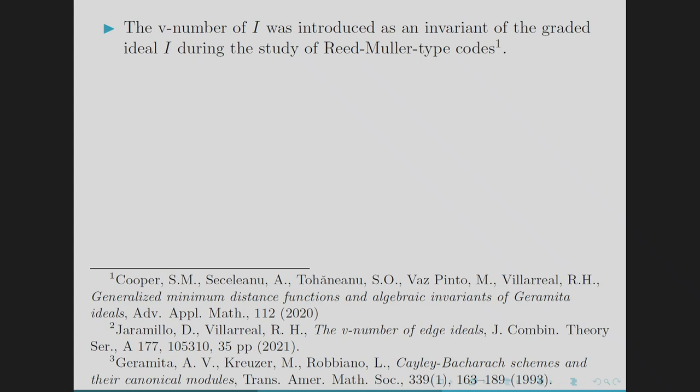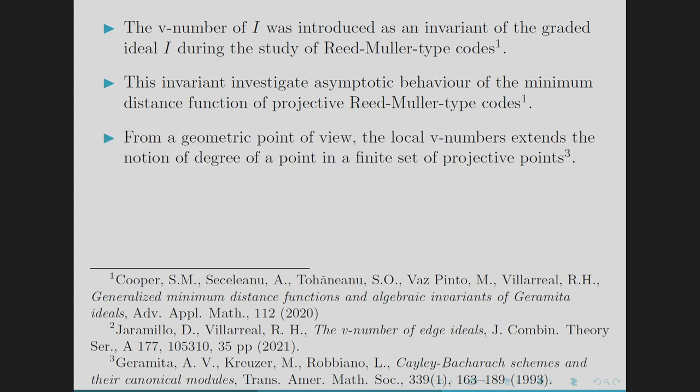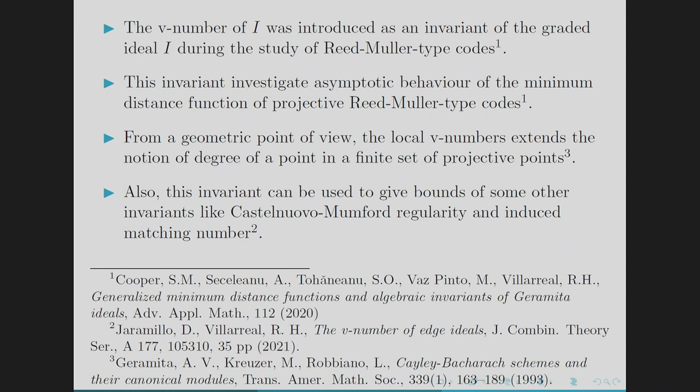The V number of I was introduced as an invariant of the graded ideal I during the study of Reed-Muller type codes, mainly in coding theory. This invariant investigates the asymptotic behavior of the minimum distance function of projective Reed-Muller type codes. From a geometrical point of view, the local V number extends the notion of degree of a point in a finite set of projective points.